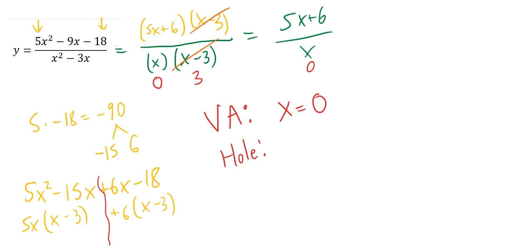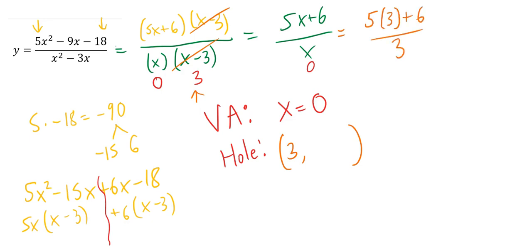My holes come from the things that canceled out. Three canceled out. My hole is 3 comma something — holes are points in the graph. The y value comes from plugging 3 into the simplified equation: 5 times 3 plus 6 over 3 equals 15 plus 6 over 3, which is 21 over 3, which is 7. I have a hole at the point 3 comma 7.